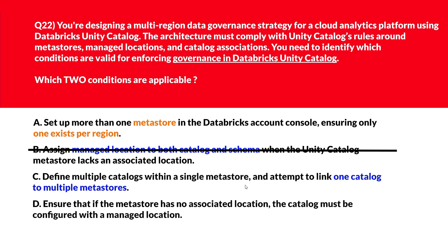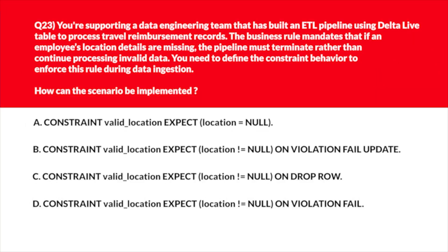We'll move to option C. C says define multiple catalogs within a single meta store and attempt to link one catalog to multiple meta stores. A catalog cannot span multiple meta stores — it belongs to one meta store, therefore wrong answer. Option D says ensure that if the meta store has no associated location, the catalog must be configured with a managed location. Catalog must define a managed location if the meta store has none, ensuring data path governance. Options A and D are the right answers.